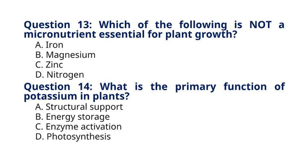Explanation: Nitrogen is a macronutrient required in relatively large quantities by plants, while iron, magnesium, and zinc are micronutrients required in smaller amounts.